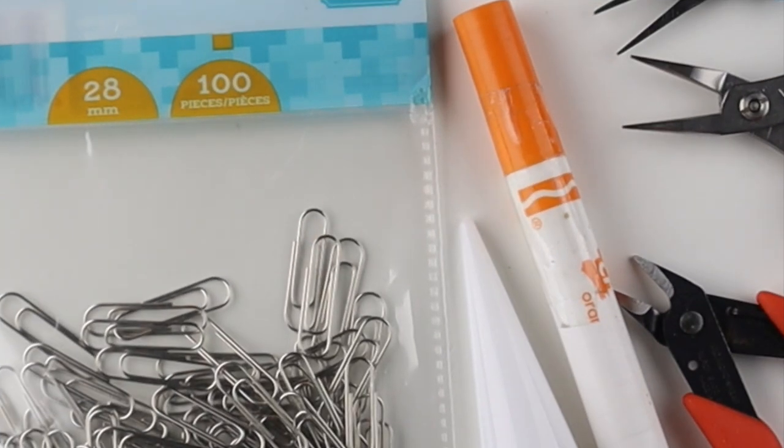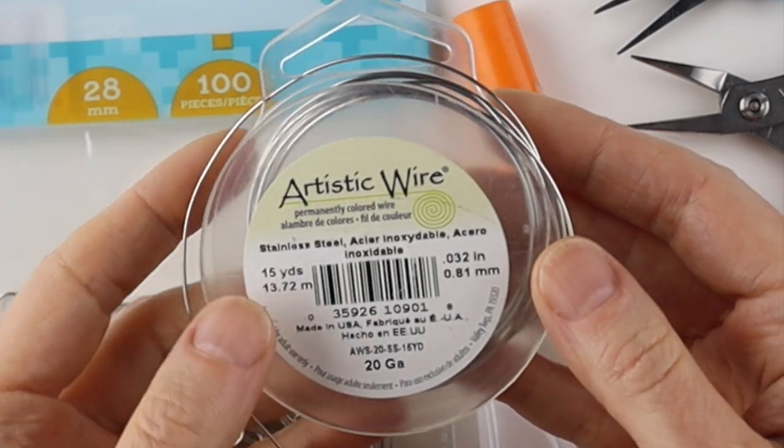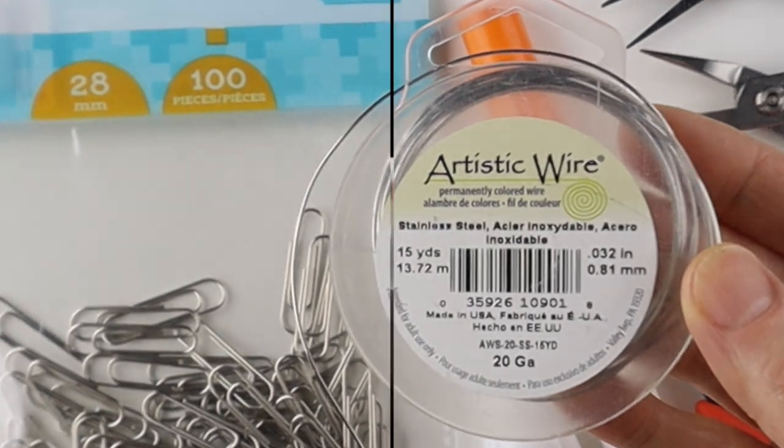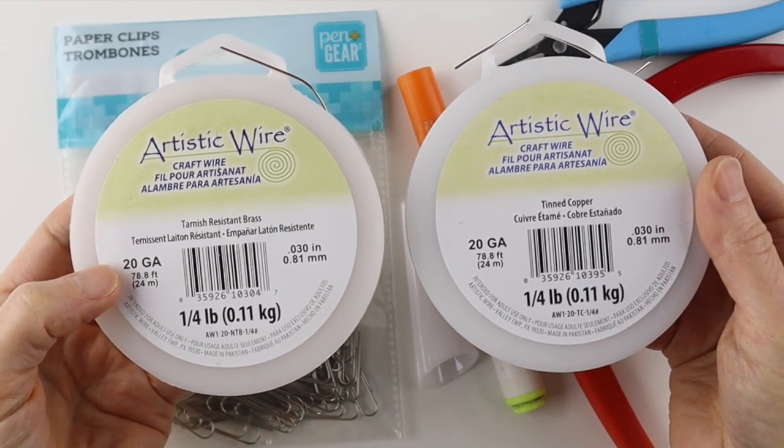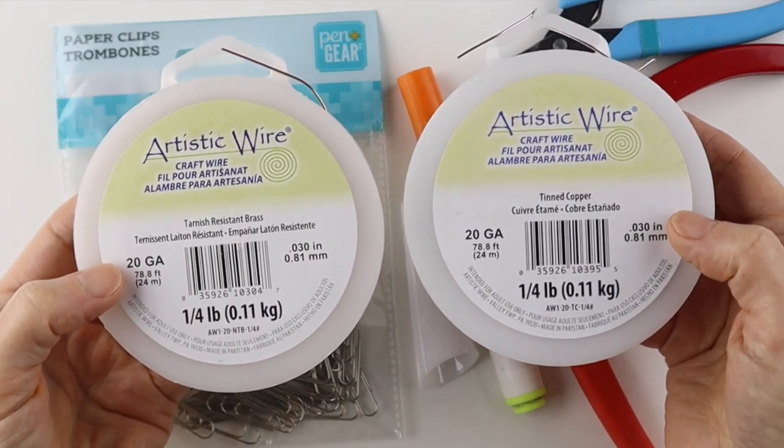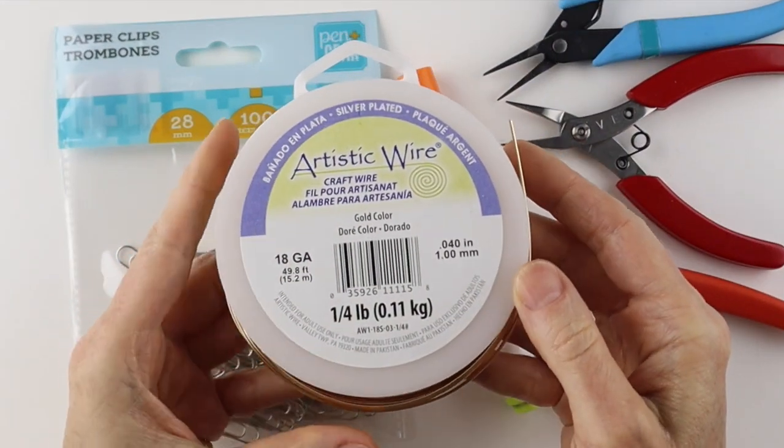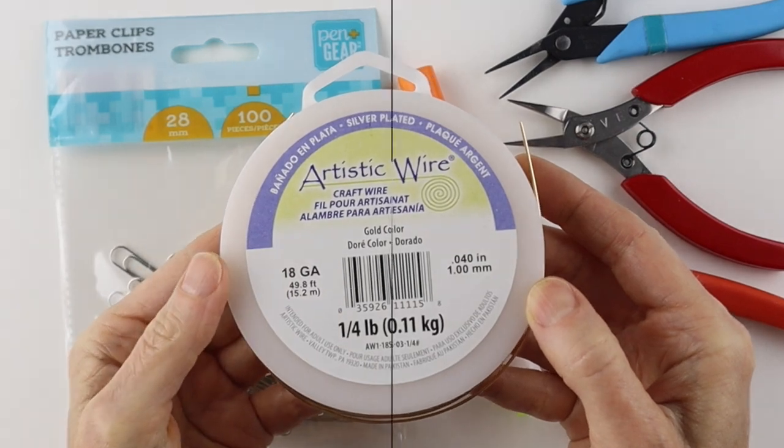If you don't have paperclips, the best thing to use is stainless steel wire. This is 20 gauge. It's quite stiff, just like the paperclips. You can use 20 gauge tarnish resistant brass, tinned copper, or any half hard wire. And if you only have a softer wire, use a little thicker, like 18 gauge.